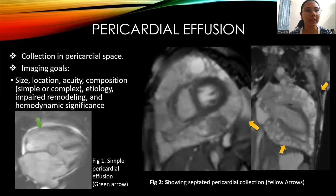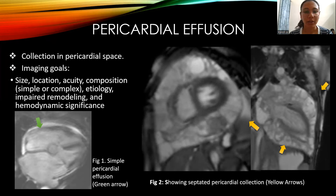Pericardial effusion is a collection in the pericardial space. The imaging goals are to assess the size of the collection, location, acuity, composition (simple or complex), etiology, impaired remodeling, and hemodynamic significance. Figure 1 shows a simple pericardial effusion and figure 2 shows a septated pericardial collection.